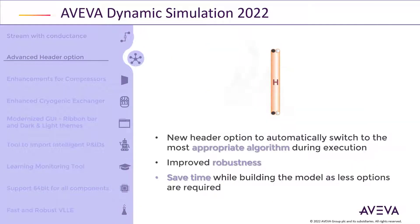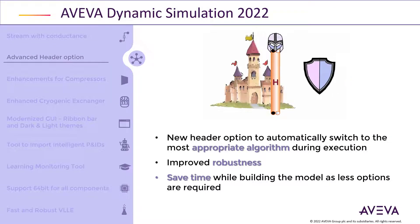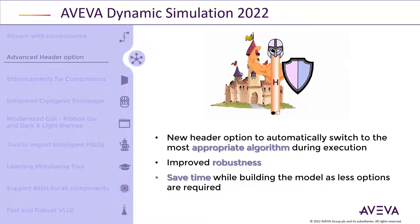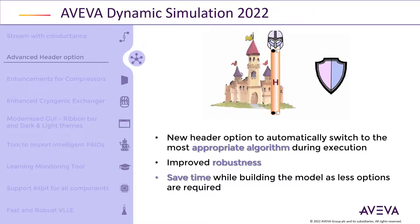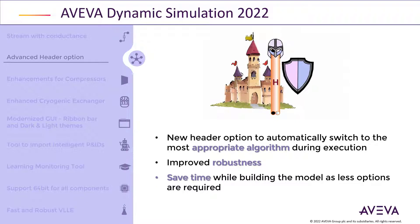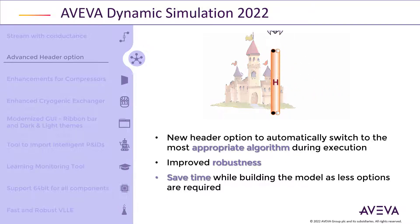We are releasing a new advanced option for the header object, which will automatically switch calculations depending on the process condition. You will no longer need to choose between many possible configurations. This feature also improves the overall robustness of the simulation.